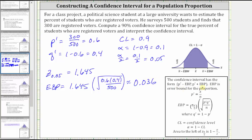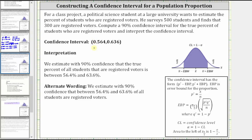And now we'll find the lower bound and upper bound of the 90% confidence interval given by p-prime minus the error bound and p-prime plus the error bound. p-prime minus the error bound is 0.6 minus 0.036, which is equal to 0.564. p-prime plus the error bound is 0.6 plus 0.036, which is 0.636. So now we know the 90% confidence interval is from 0.564 to 0.636.